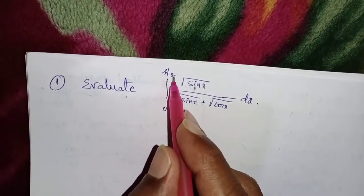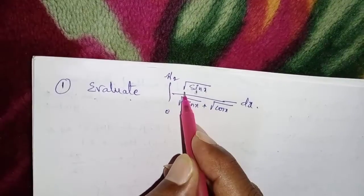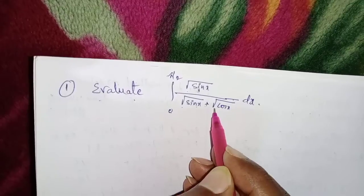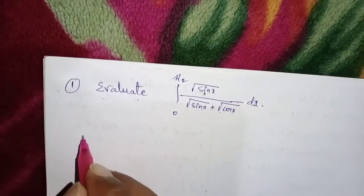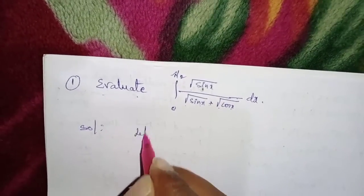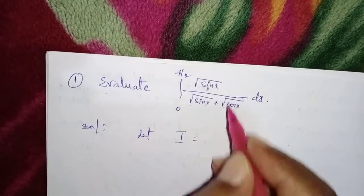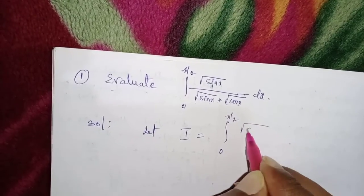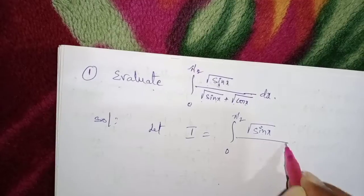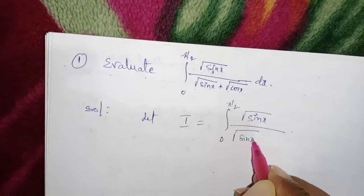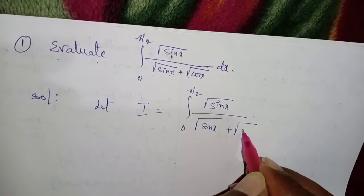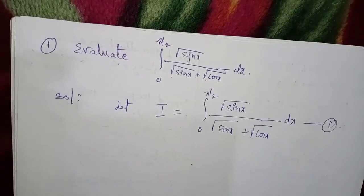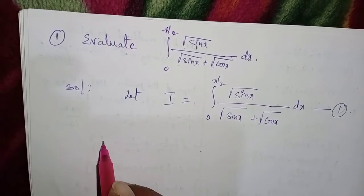Evaluate the integral from 0 to π/2 of √sinx over (√sinx + √cosx) dx. Let capital I equal the given integral: I = ∫₀^(π/2) √sinx / (√sinx + √cosx) dx. This is considered equation number 1.